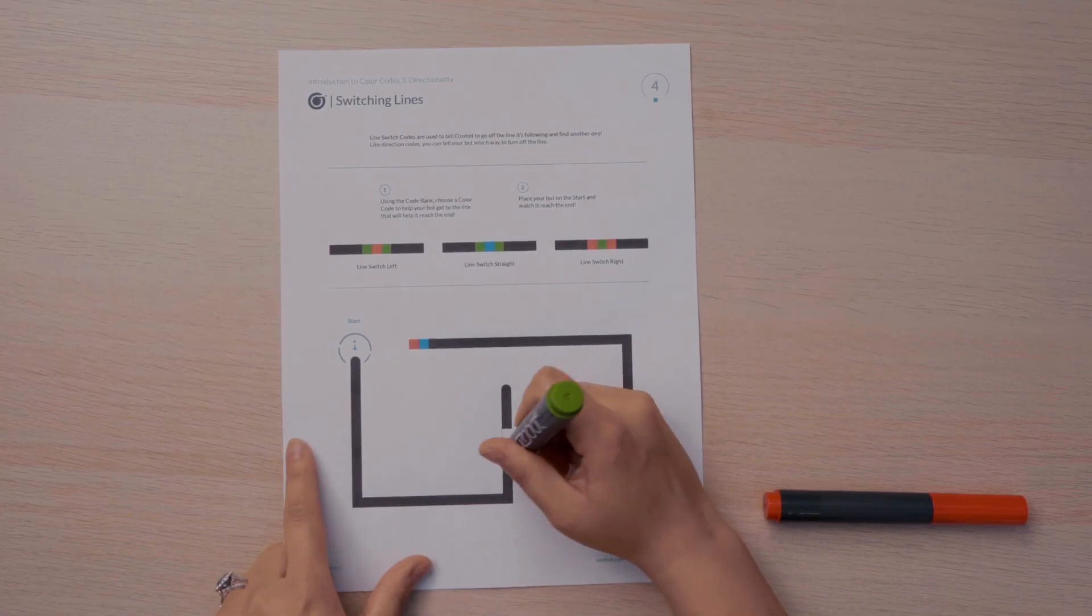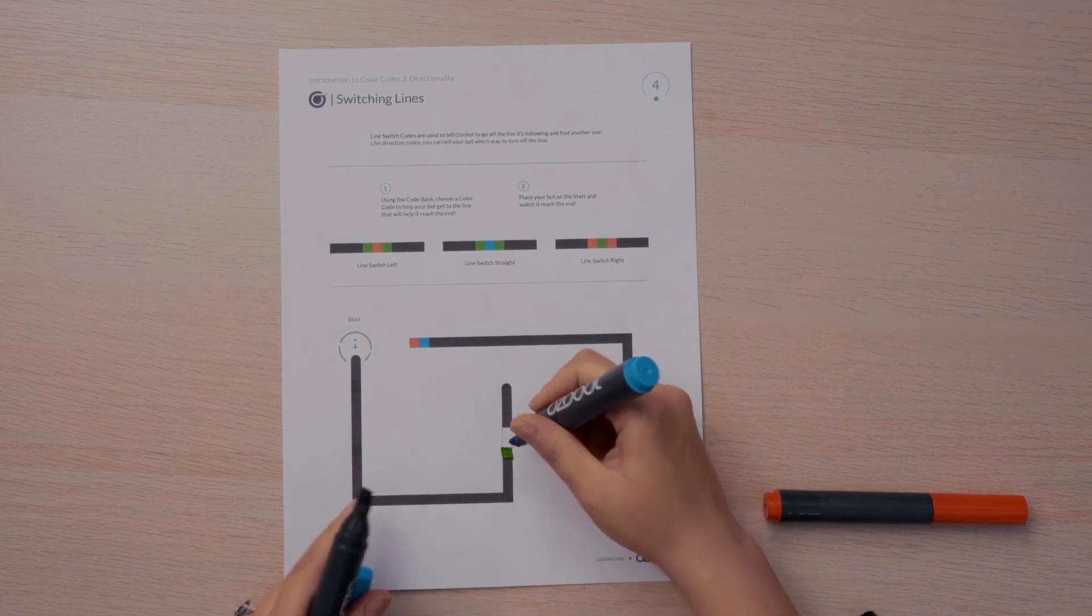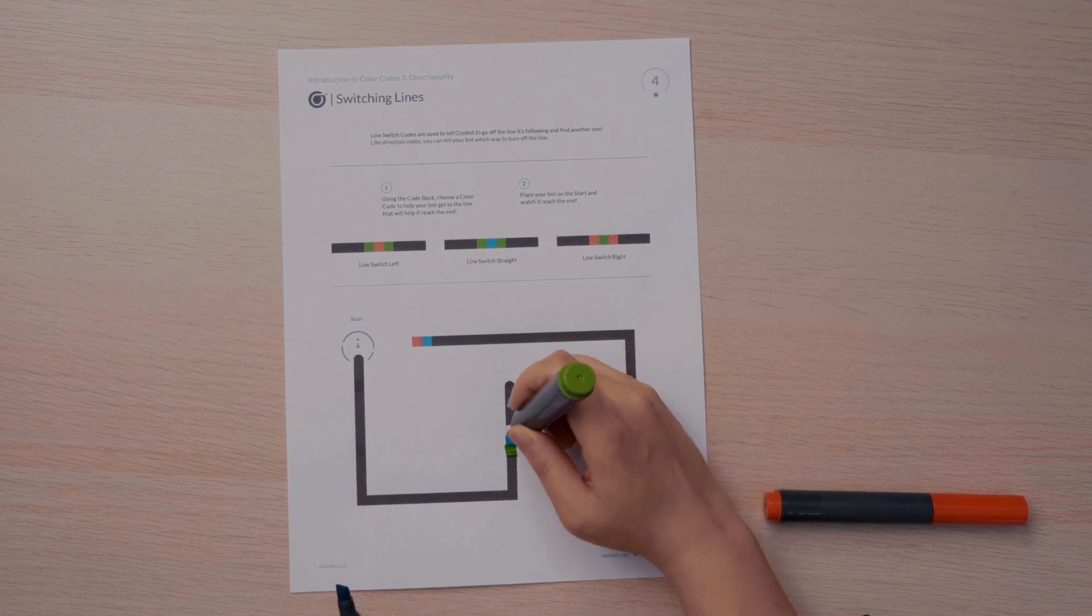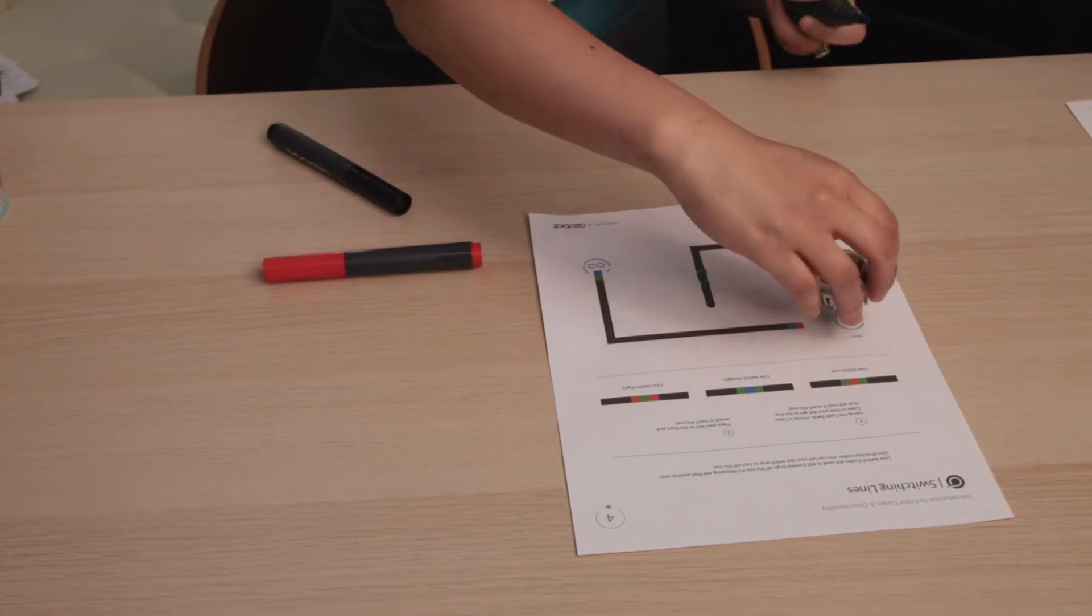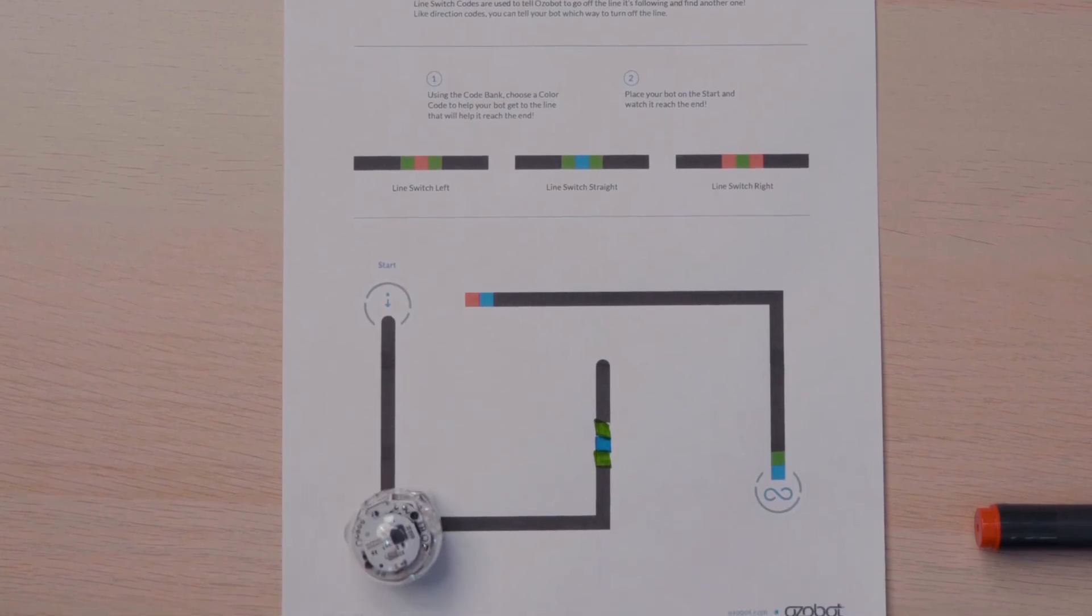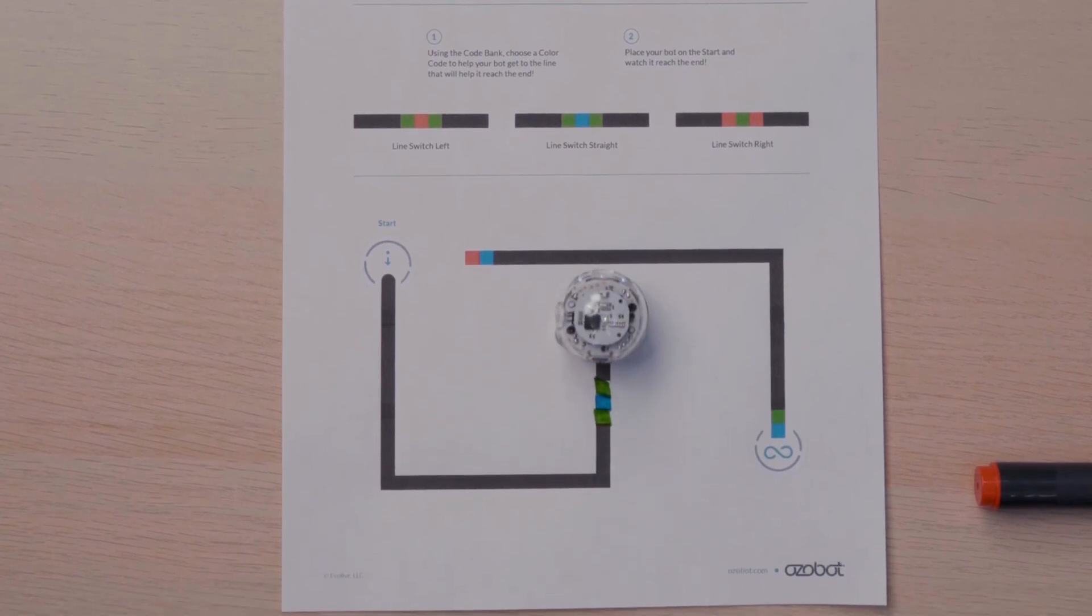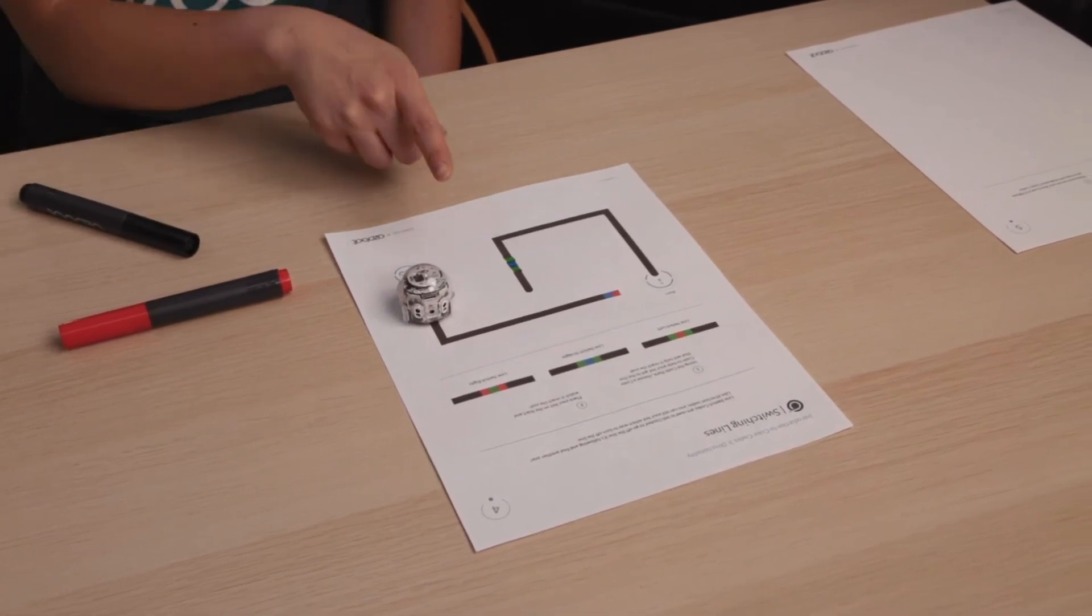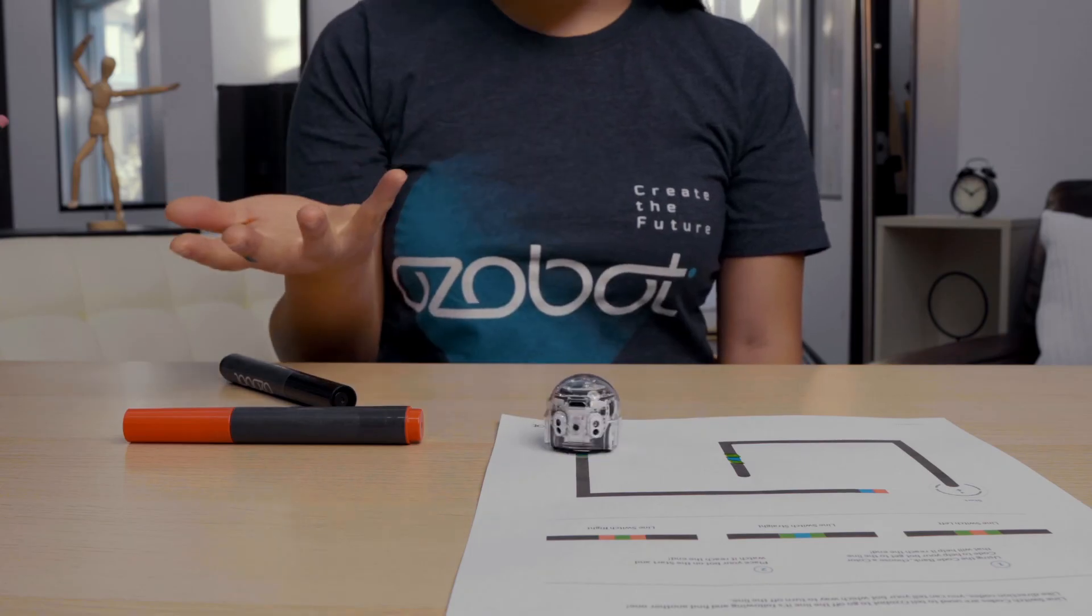I'll start with green, move to blue, and end with green. Then I'll place my bot on start to see what happens. Now when the bot reaches the new line, it makes a random decision whether to turn right or left. It made it to the end.